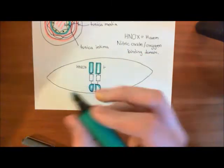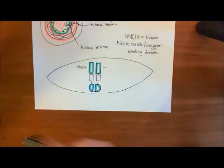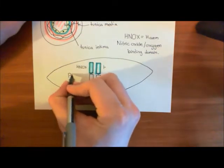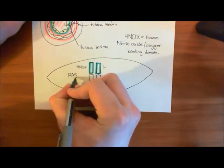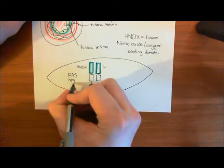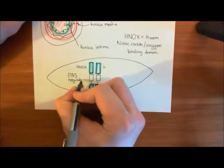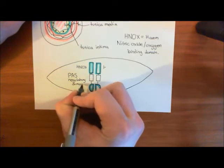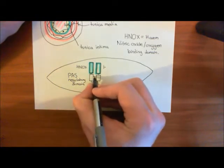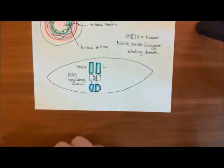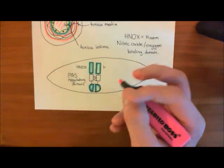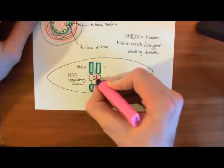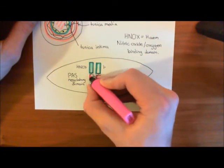in the middle here, these are what are known as PAS regulatory domains. These are PAS regulatory domains. And both the alpha and the beta subunit both have a PAS regulatory domain. And these have bonds between one another. So, each of the PAS regulatory domains have links between one another. So, I'll color in the PAS regulatory domains in pink here.